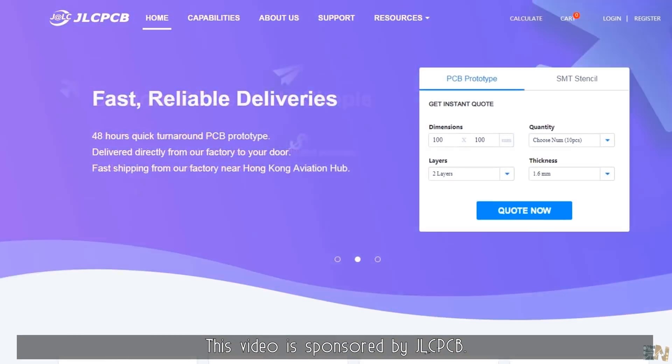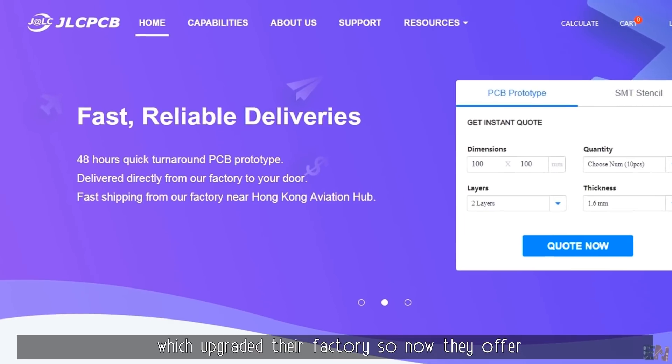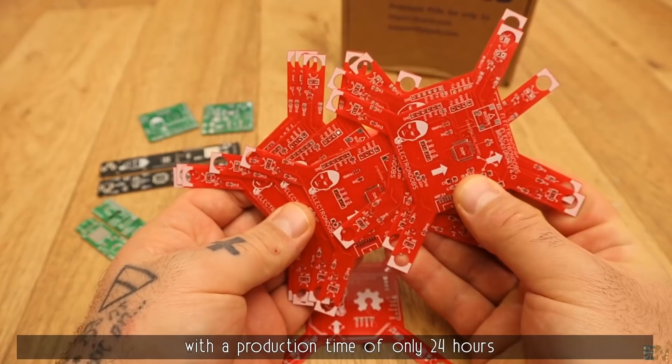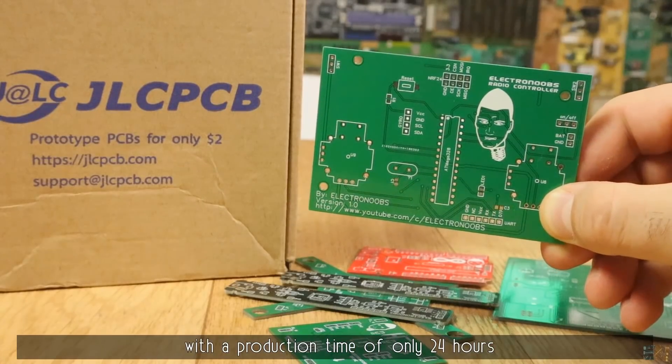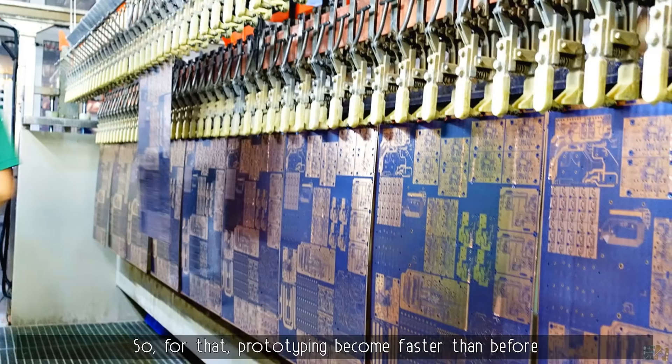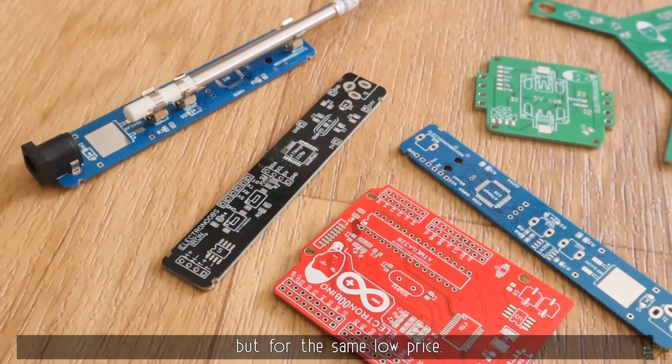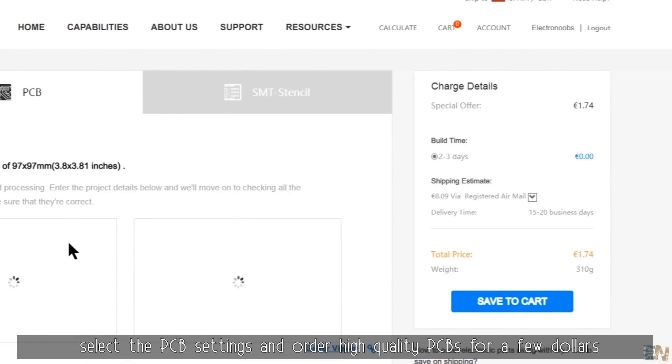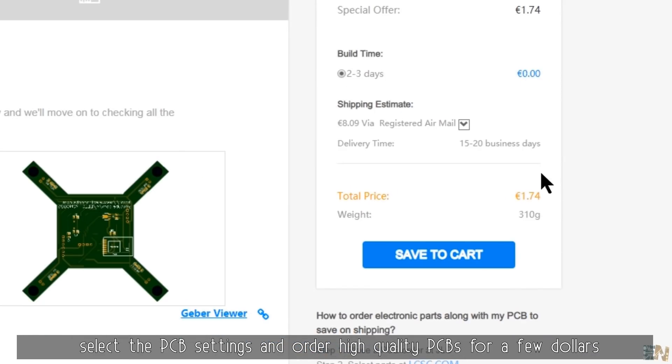This video is sponsored by JLCPCB, which upgraded their factory so now they can offer 5 pieces of common two-layer PCBs with a production time of only 24 hours and that without any additional fees, so that prototyping becomes faster than before but for the same low price. Upload the Gerber file, select the PCB settings and order high quality PCBs for a few dollars.